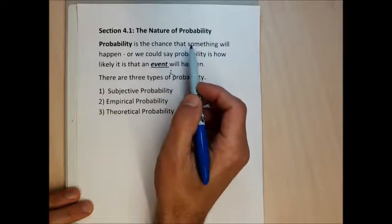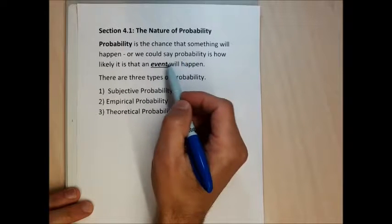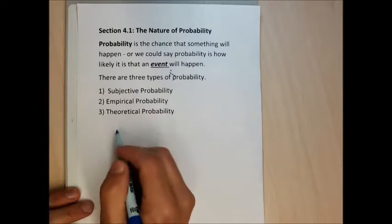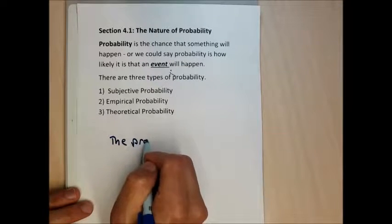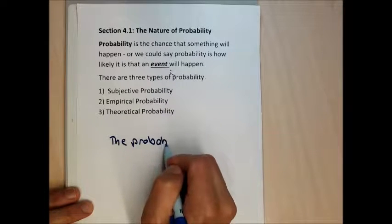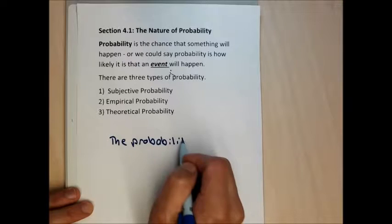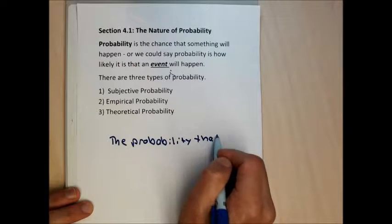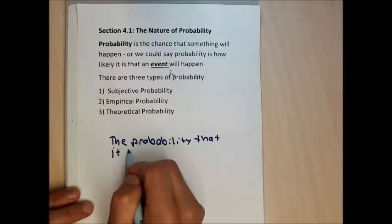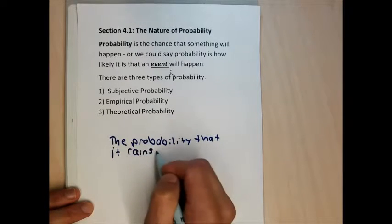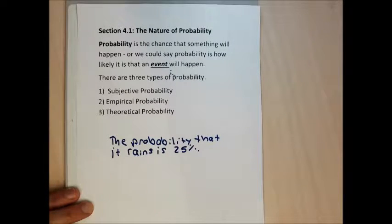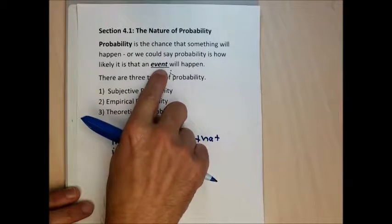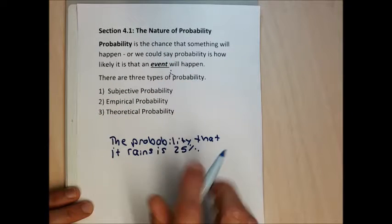Probability is the chance something will happen — how likely an event will happen. For instance, the probability that it rains today is 25%, just because it's cloudy. The event would be raining today. The probability is a numerical chance that that happens, and here I wrote it as a percent.